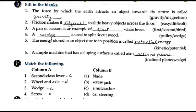Fill in the blank 6: A simple machine that has a sloping surface is called a/an blank. The machine whose surface is sloping - a slanted surface - is called an inclined plane.